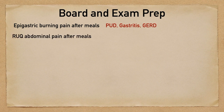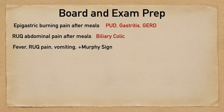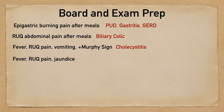If the question stem asks you about fever, right upper quadrant pain, vomiting, and a positive Murphy sign, then they're asking you about cholecystitis. If the patient presents with fever, right upper quadrant pain, and jaundice, remember that this is Charcot's triad, and this will help you remember that it's cholangitis. If the patient has fever, right upper quadrant pain, jaundice — that triad — plus altered mental status and hypotension, well this is Reynolds' pentad, and this too describes cholangitis.